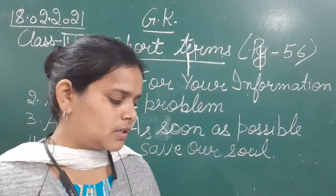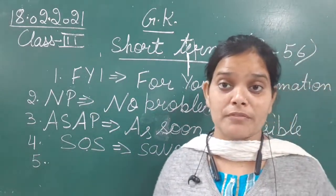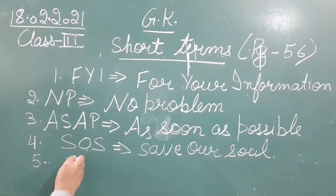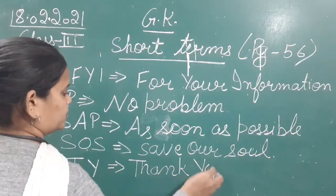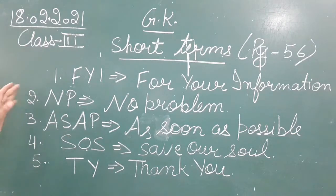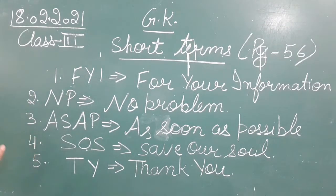Moving next to the fifth, that is T-Y. This is a common expression we use in our daily life. The full form of T-Y is 'Thank You'. So T-Y stands for thank you. These are the full forms of the first five acronyms: FYI is 'For Your Information', NP is 'No Problem', ASAP is 'As Soon As Possible', SOS is 'Save Our Soul', and TY is 'Thank You'. Clear?